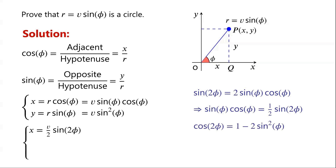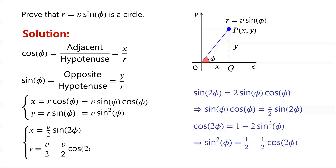We know that cos(2φ) equals 1 minus 2·sin²(φ), so sin²(φ) equals one half minus one half·cos(2φ). Therefore, y equals v/2 minus v/2·cos(2φ).